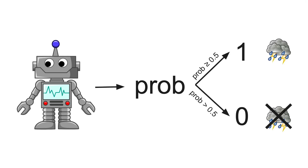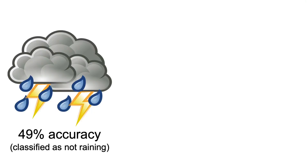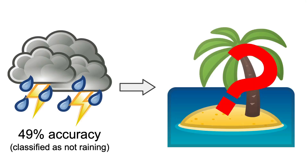Unfortunately, this logic may lead to a phenomenon known as miscalibration, where the probabilities predicted by your model are disconnected from the real distribution of your data, and the usual metrics like the accuracy or the F1 score are not able to capture it. For instance, if you knew that there was a precipitation chance of 49%, which would be classified as not raining by the model, then would you still have thought of going on vacation in that period? Probably not.